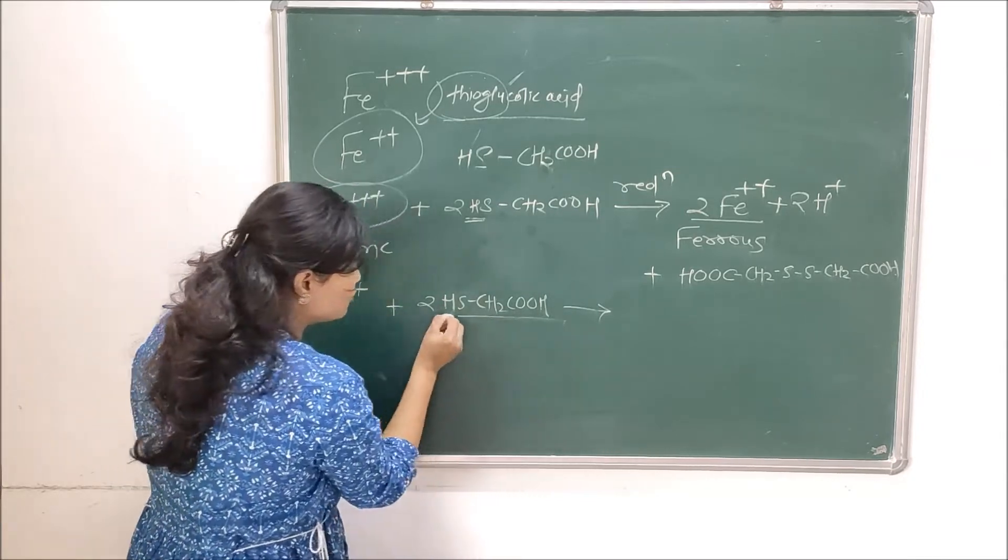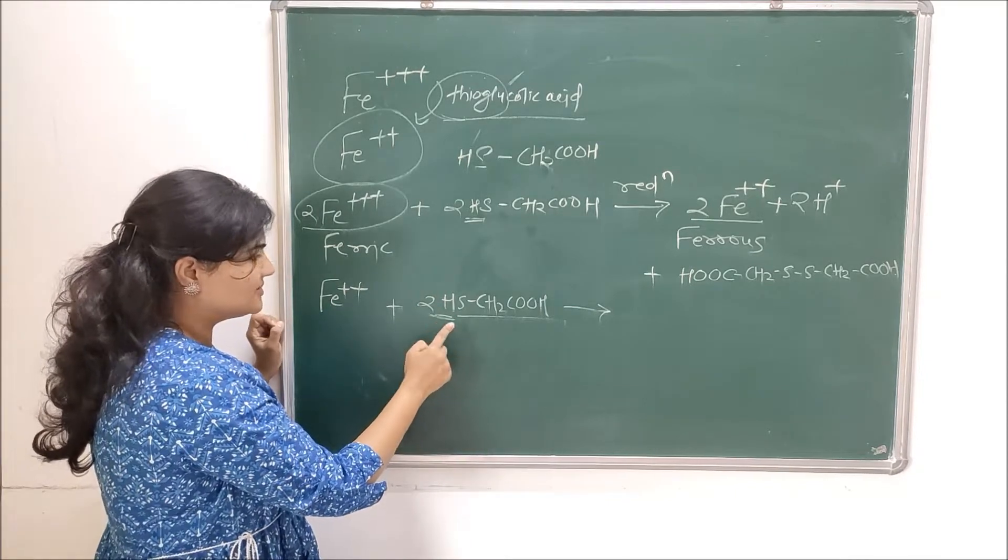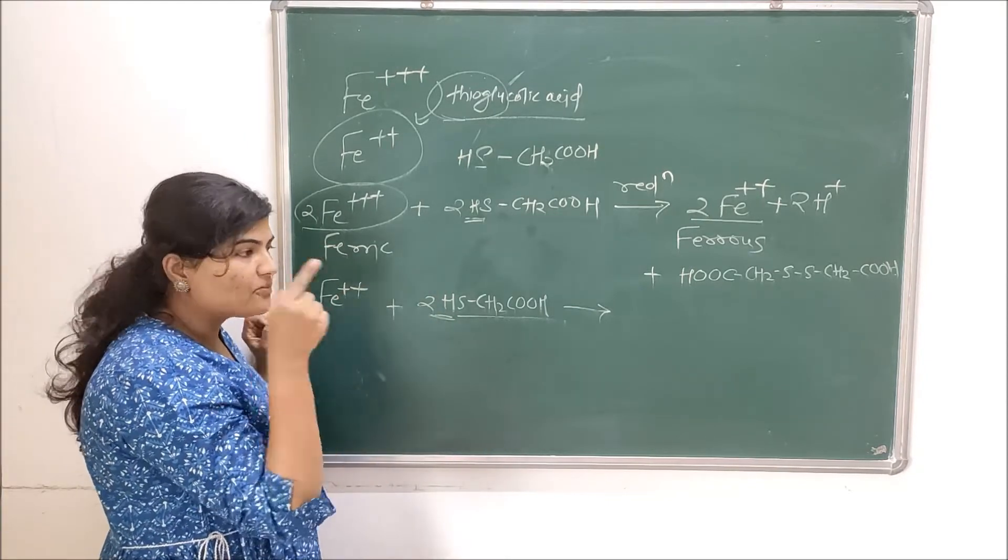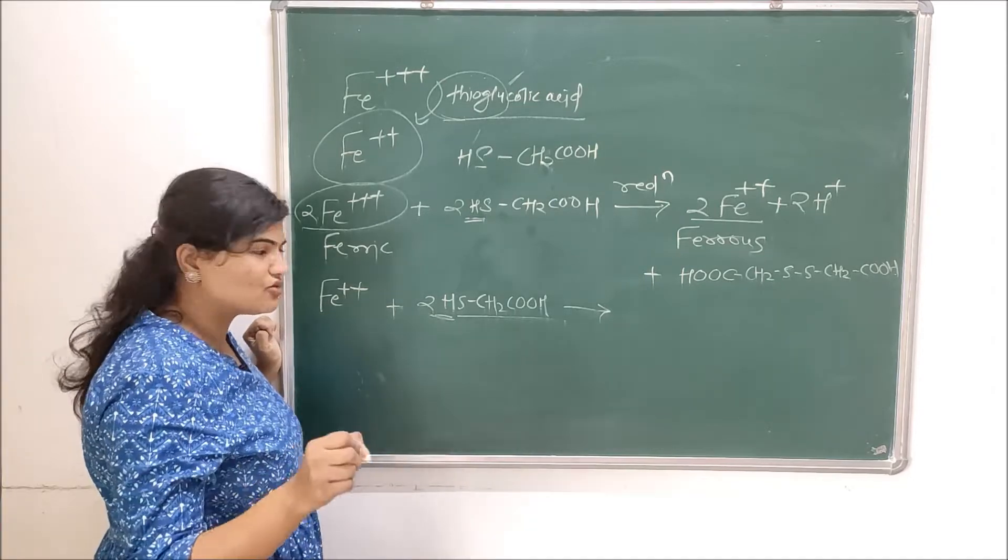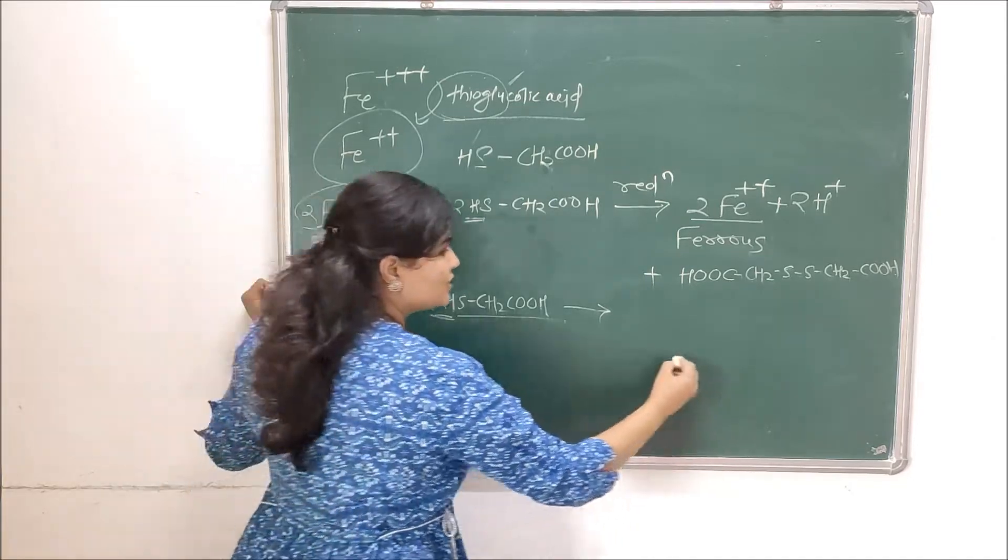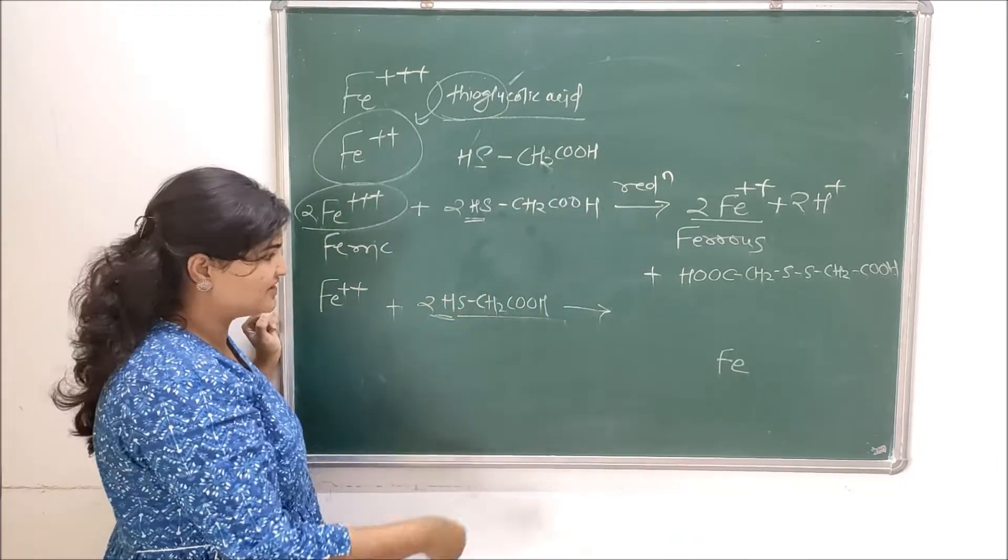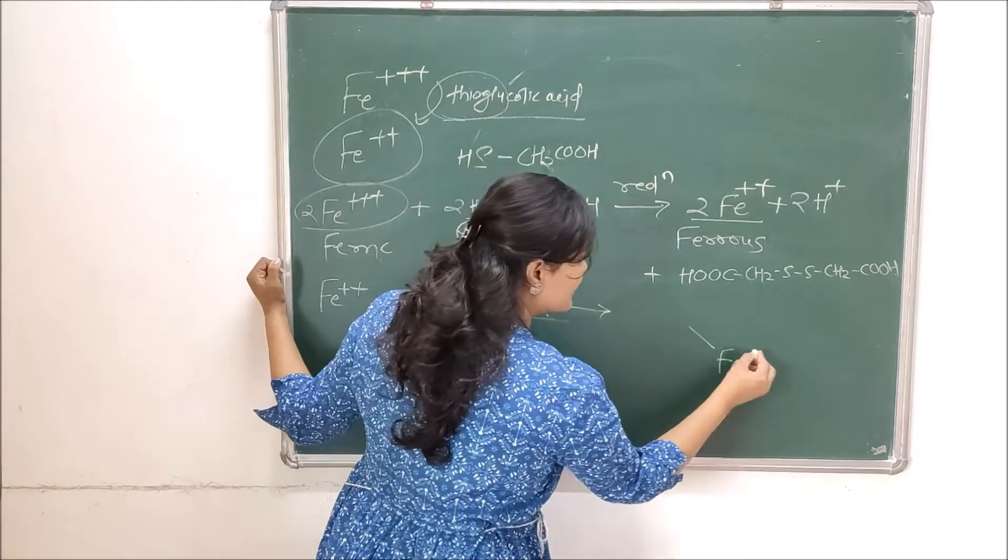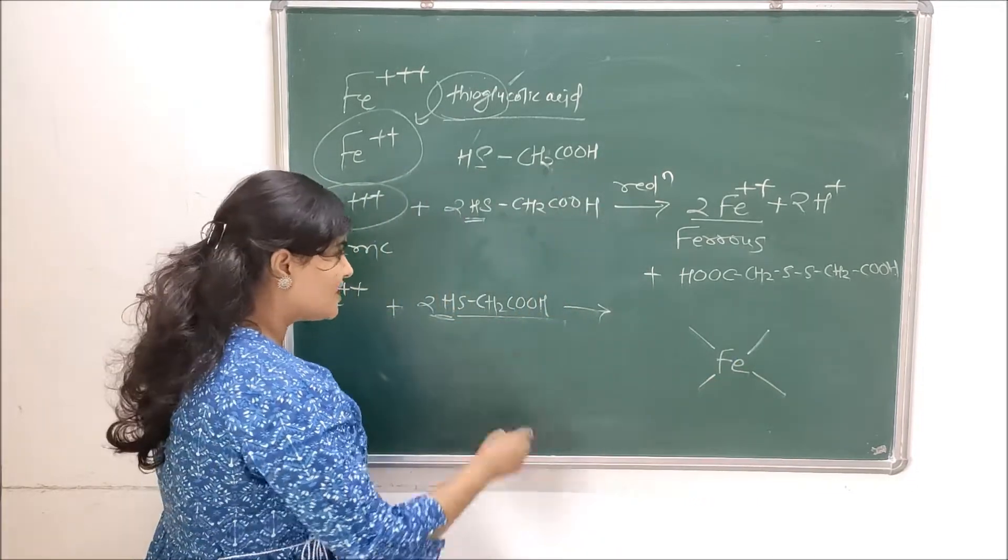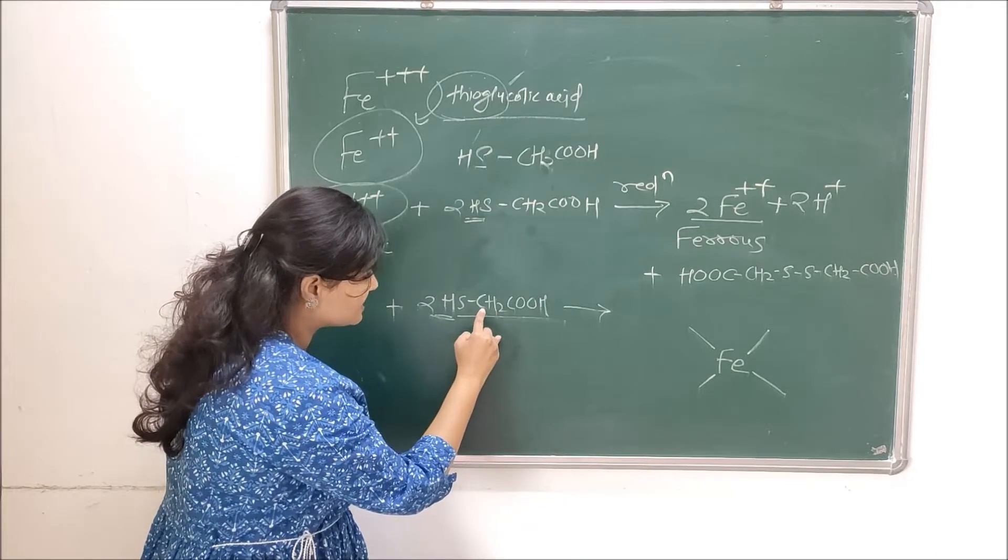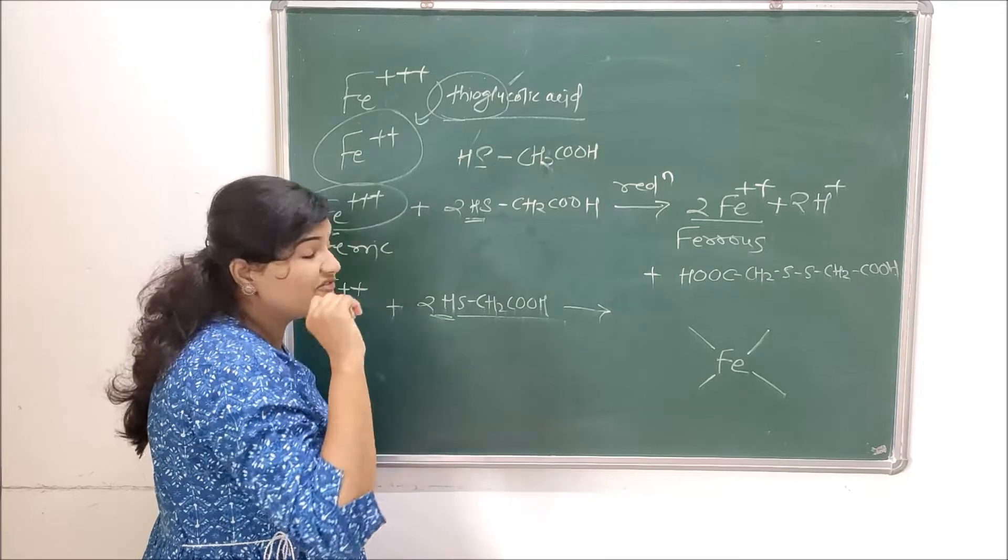So how are you going to write this complex? Now see and look at the molecule - it has this part and the proton part will set free. So how you are going to write the complex, just observe the way I am writing so that it would become easier for you to draw it. What I'm going to do is I'll put this iron in the center and then I'll draw four bonds to it.